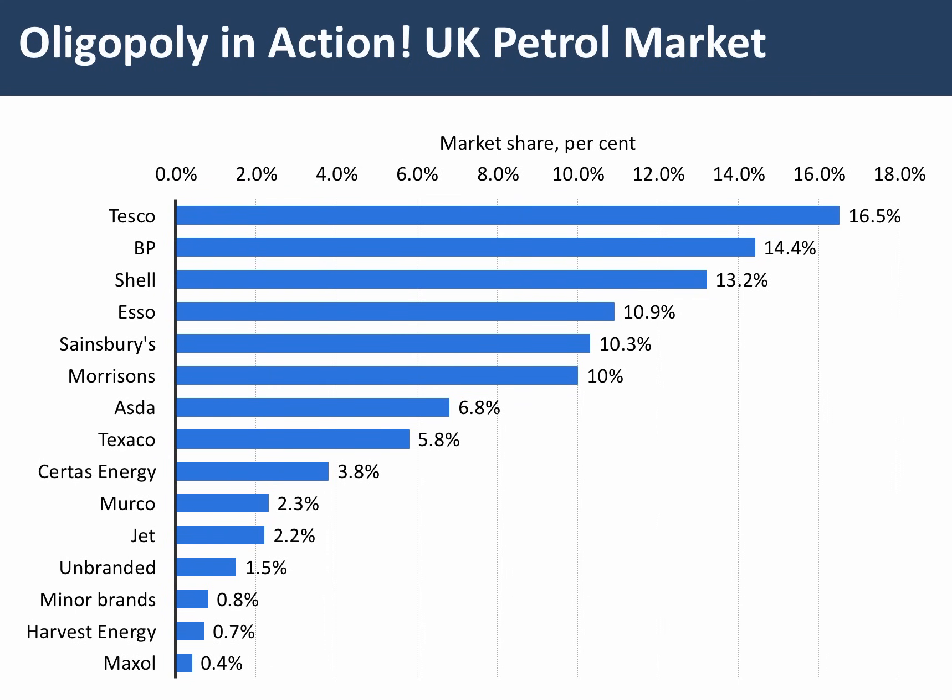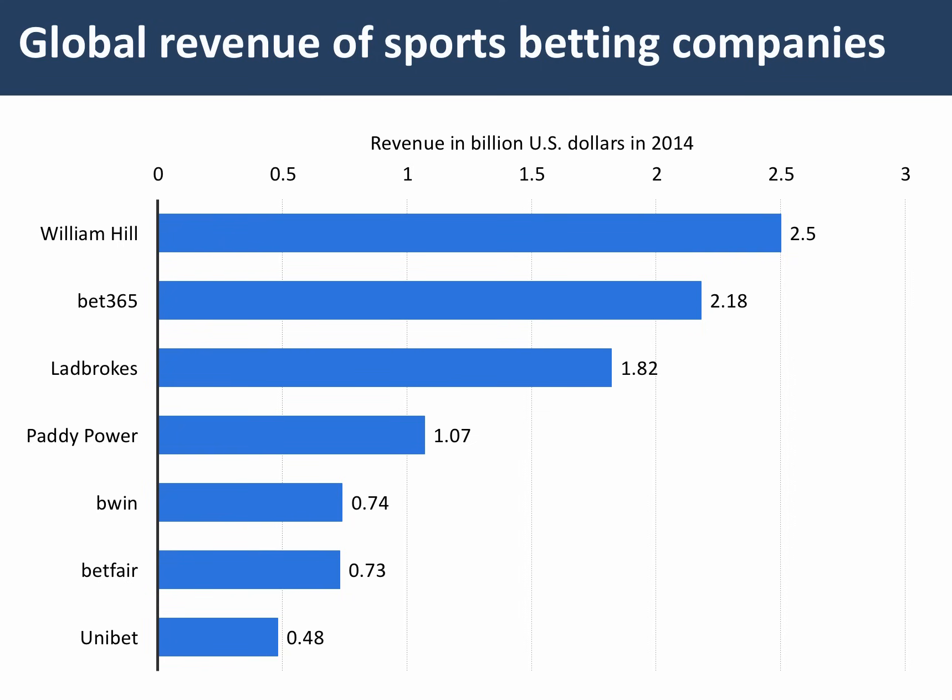Here's a good example of an oligopolistic market. This is the market share for petrol in the UK in 2015 — Tesco is the leading supplier with over 60% of the market, and essentially there are six firms with more than 10% each. The petrol market in the UK is highly concentrated in the hands of just a handful of big firms. In a different example, here's the global revenue from the leading sports betting companies — there are between four and seven extremely big businesses globally in this fast-changing market.